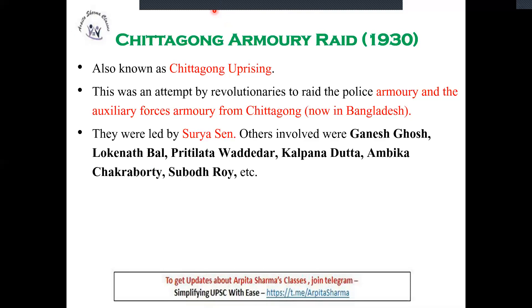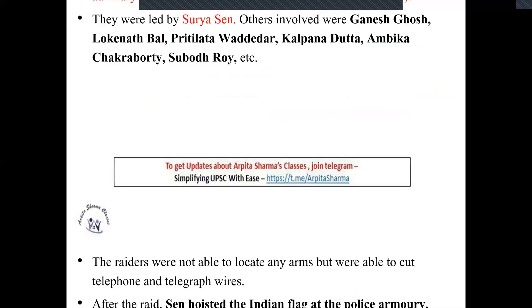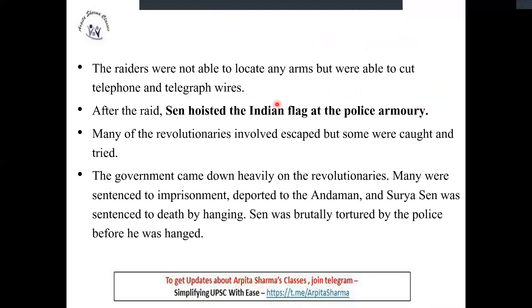The raiders did not find the arms they were looking for, so they cut the telephone and telegraph wires instead. After the raid, Surya Sen hoisted the Indian flag on the police armory. Most revolutionaries escaped, but some were caught and sent to the Andaman Islands. Surya Sen was sentenced to death by hanging, but before he was hanged, he was subjected to extremely brutal torture in jail.